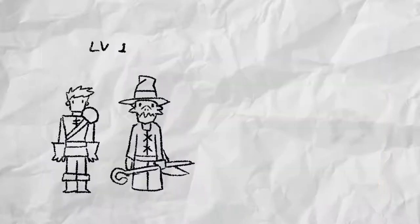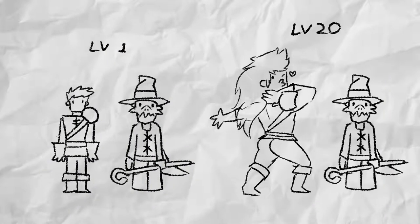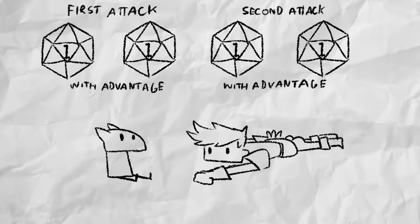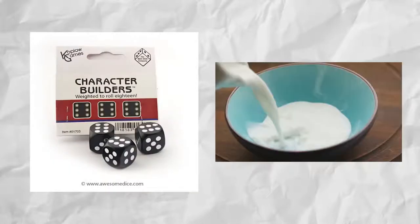Not to mention you getting more ability score increases than any other class means that if you go a turn without hitting at least something, then you must have made some kind of D&D sin that angered Gary Gygax, like getting weighted dice or putting milk in before your cereal.